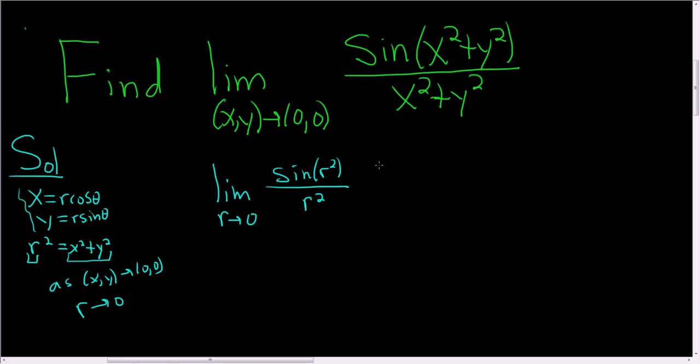This is of the form 0 over 0. Sine of 0 is 0. So this is an indeterminate form. So we can use L'Hôpital's rule.